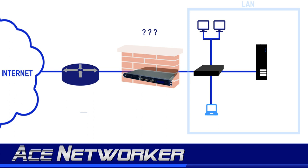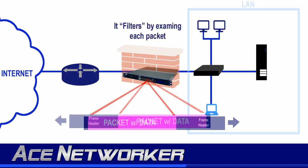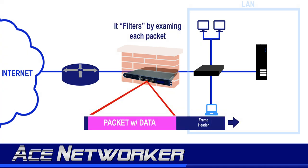How does it do that exactly? If we look at the most basic functionality of a firewall, it looks at each packet and makes a decision to block or allow that traffic based on a set of rules. That can be traffic arriving on your network from outside, or inside traffic traveling outside your network to the external network, which is usually the internet.